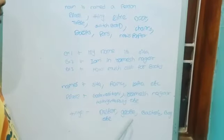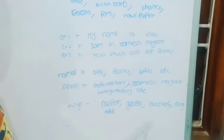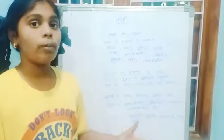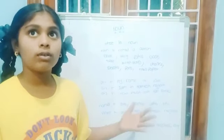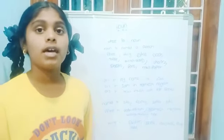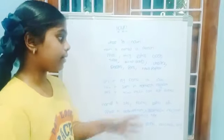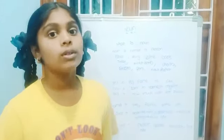Things: Duster, Globe, Basket, Bag, etc. We have so many things in the world. We have so many names. Those names we cannot write on the board. That is why I am speaking now.